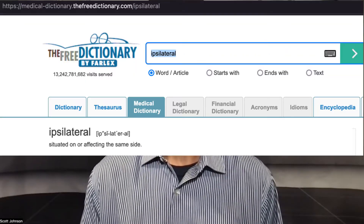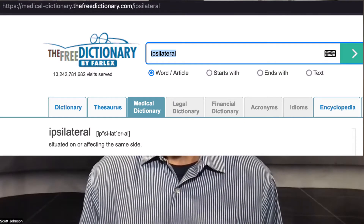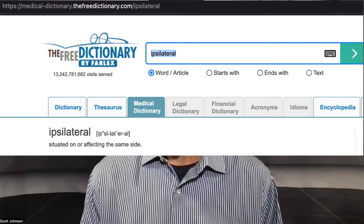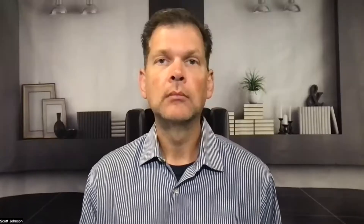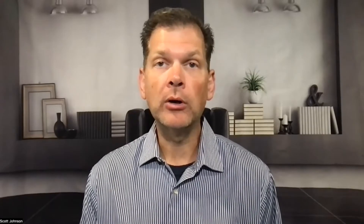Now let's look at ipsilateral and contralateral. These two words are also directly related to your access site. According to the same online dictionary source, ipsilateral is generally defined as situated on or affecting the same side. If I puncture a right femoral artery, any vessel that I go to from that right puncture site in that right leg — whether it's distal or proximal, antegrade or retrograde — are all considered ipsilateral, because it's on the same side as that puncture site.